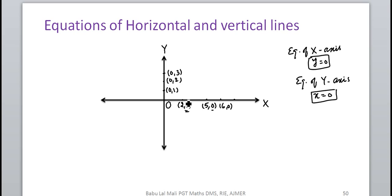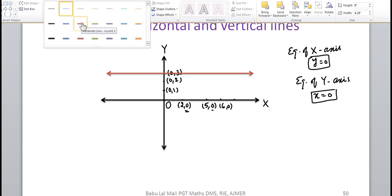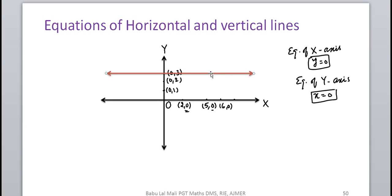If you think about a line which is parallel to the x-axis, suppose I have a line passing through the point (0,3). This line is at a distance of 3 units from the x-axis, so this line's equation will be y=3. Any line which is parallel to the x-axis and above it at a distance of 3 units will have equation y=3.